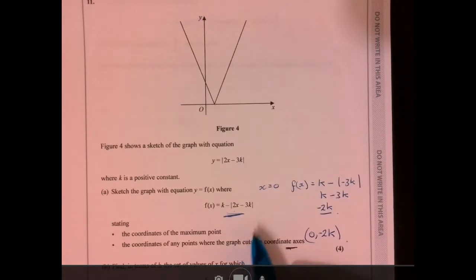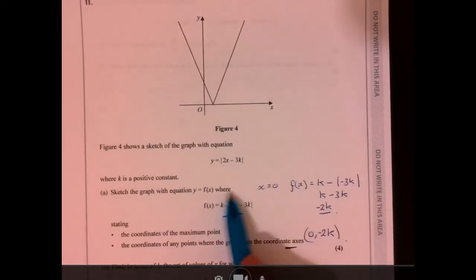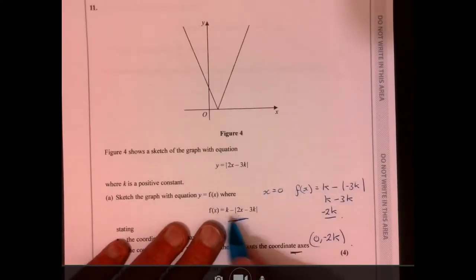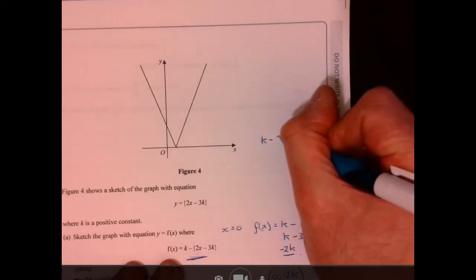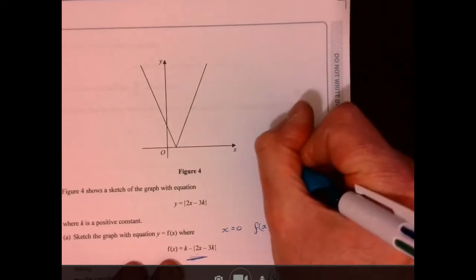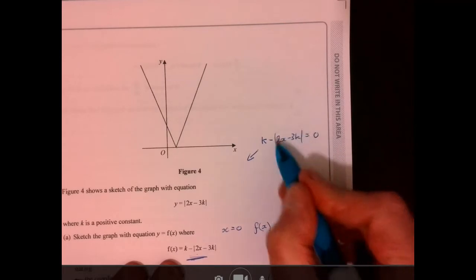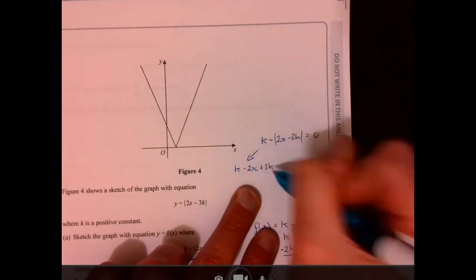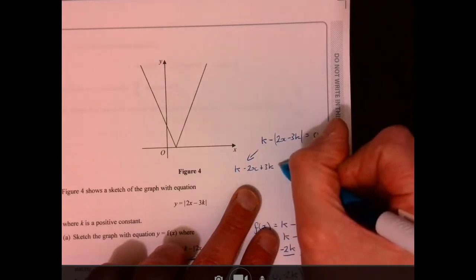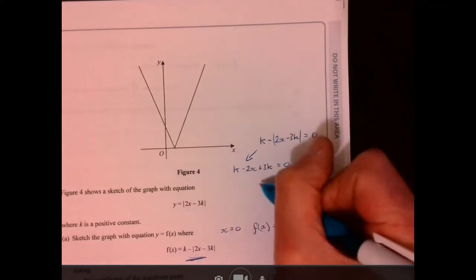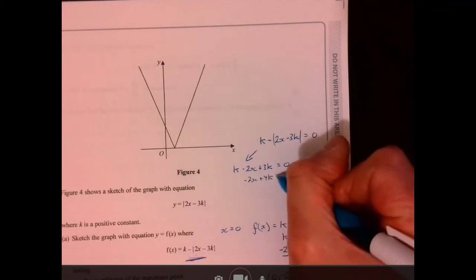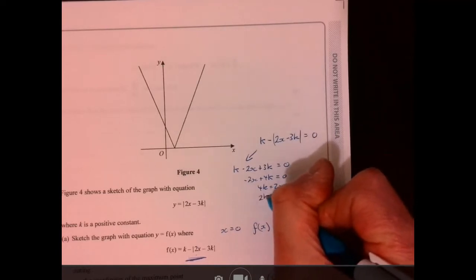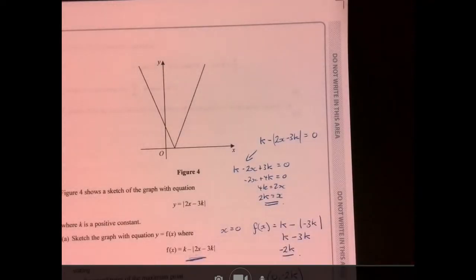What about when it's going to cross the x-axis? In other words, when is this going to equal 0? So let's have a think about that. Now there's two possibilities. So let's think about when that's going to equal 0. Now, possibility 1 is when this is a plus. So that would be minus 2x and then you get plus 3x. So that's minus minus there. That equal to 0. So that would give me minus 2x plus 4k equals 0. So 4k equals 2x divided by 2. So x equals 2k.